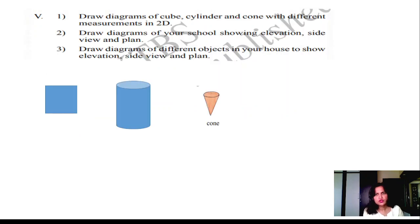Draw the diagrams of the cube, cylinder, and cone with different measures. Draw the diagrams of your school showing elevation, front side, and as the house diagram is shown, your school's diagram you draw. Draw diagrams of different objects in your house to show elevation, side view, and plan view of the glass, the mug, and the shapes you take.